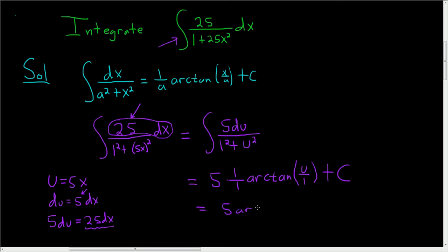we just write this as 5arctan—and let's see, u was 5x—so this is 5arctan(5x) plus our constant C.